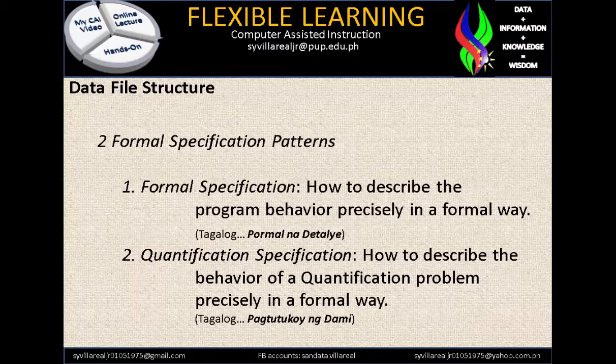We have two formal specification patterns. The first one is the formal specification — how to describe the program behavior precisely in a formal way. The second one is quantification specification — how to describe the behavior of the quantification problem precisely in a formal way. These two join together but have different functions. Without formal specification, we cannot go directly to quantification specification. But quantification specification, because it is quantified, goes to any direction — like case studies, solution patterns, and data description.